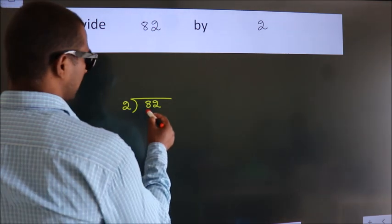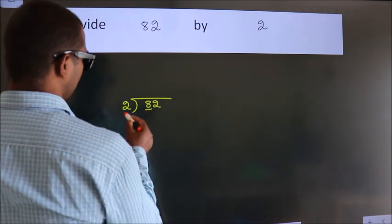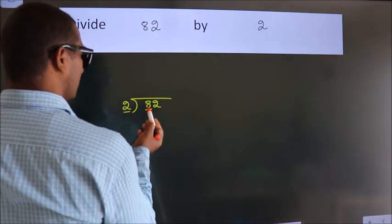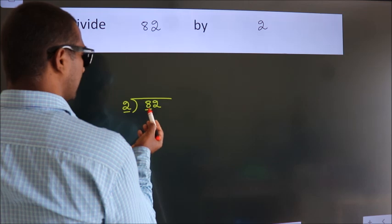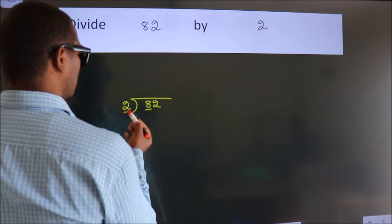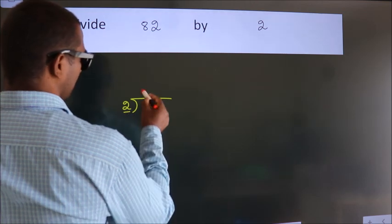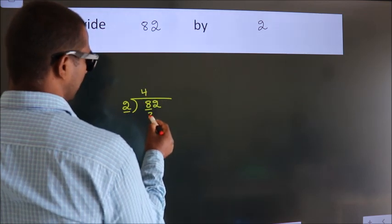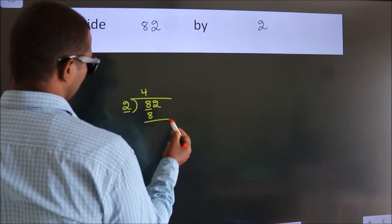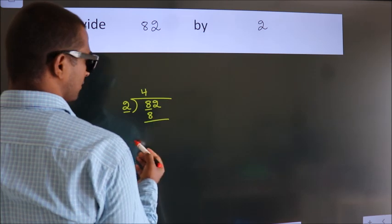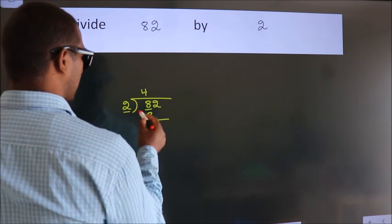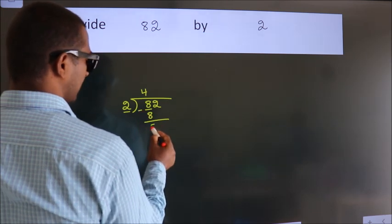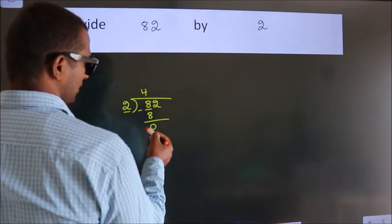Here we have 8, and here 2. When do we get 8 in the 2 times table? 2 fours are 8. Now we should subtract. We get 0.